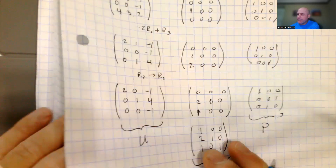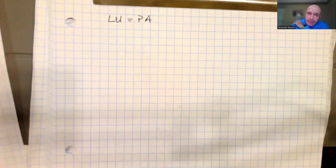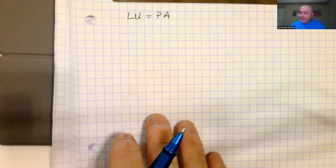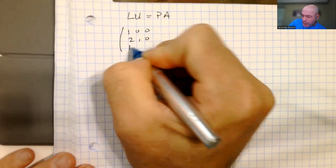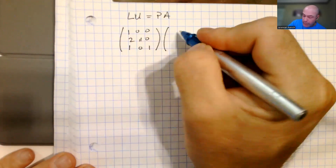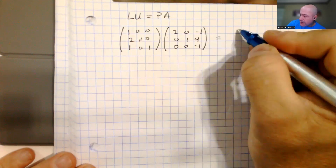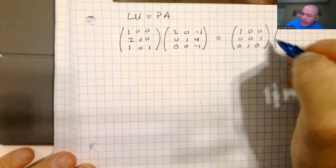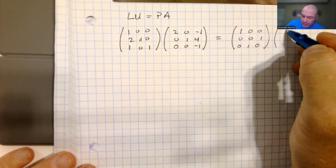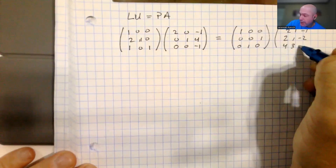Now that we have our P, L, and U matrices, let's confirm that LU equals PA - a good check to make sure we didn't make mistakes. L was [1,0,0; 2,1,0; 1,0,1] and U was [2,0,-1; 0,1,4; 0,0,-1]. We compare this to P times A, where P was [1,0,0; 0,0,1; 0,1,0] - the identity matrix with rows two and three switched - and the original A was [2,1,-1; 2,1,-2; 4,3,2].